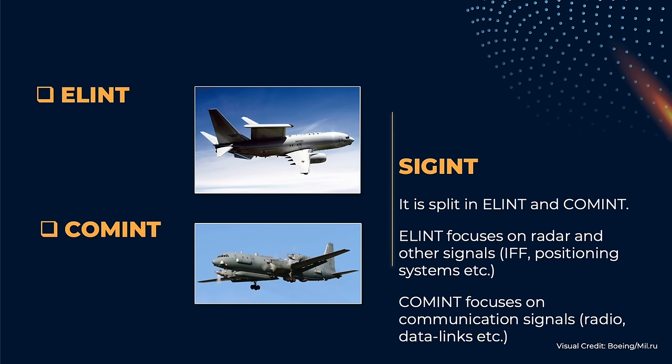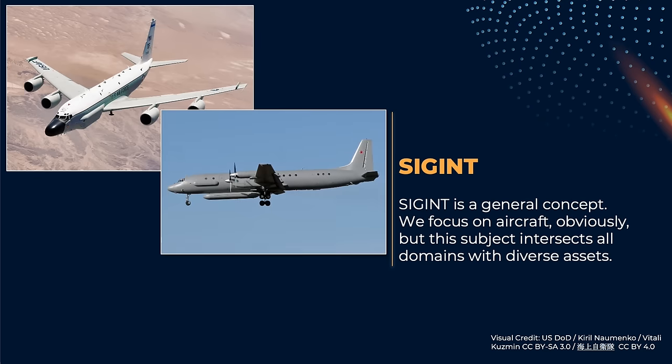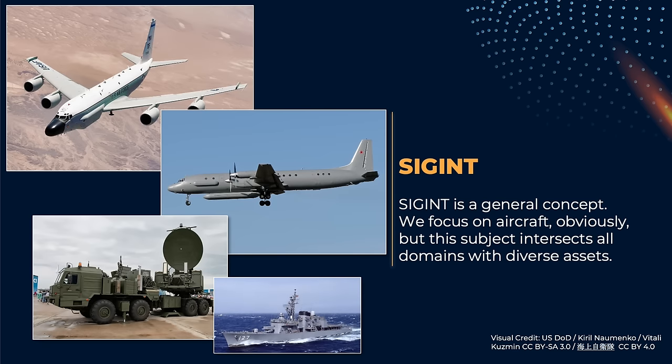ELINT focuses particularly on radars or positioning services, while COMMINT focuses on the communication-related emissions. Assets like the RC-135 or the Russian Ilyushin-20M are flying examples we are particularly interested into, but SIGINT systems may be ground-based, fixed or mobile, ship-based, and so on.